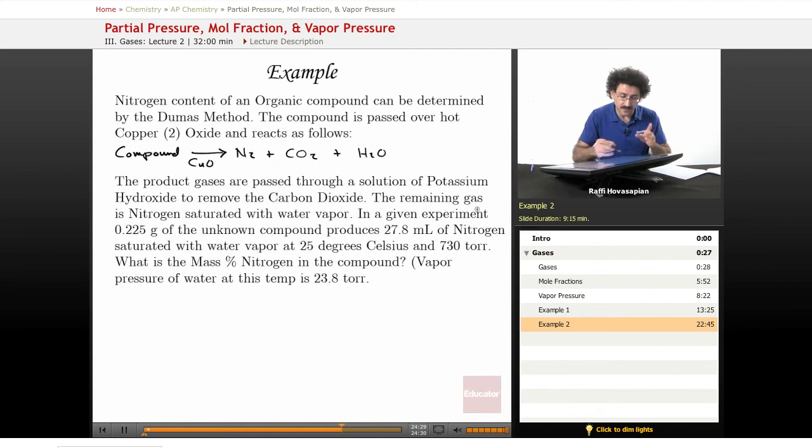In a given experiment, 0.225 grams of the unknown compound produces 27.8 milliliters of nitrogen saturated with water vapor at 25 degrees Celsius and 730 torr. What is the mass percent of nitrogen in the compound? The vapor pressure of water at this temperature is 23.8 torr.